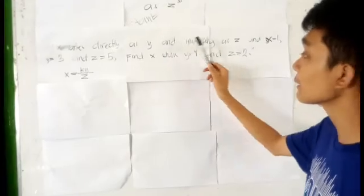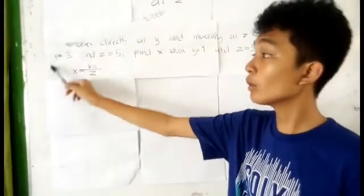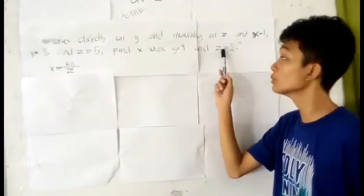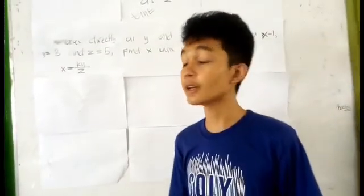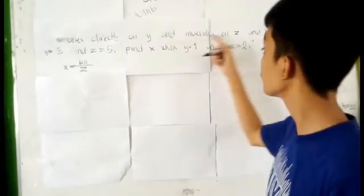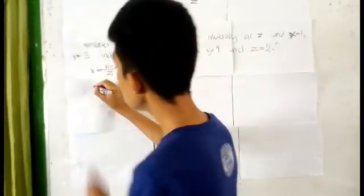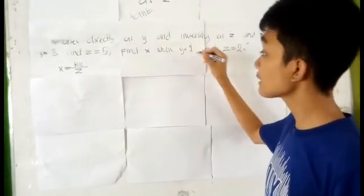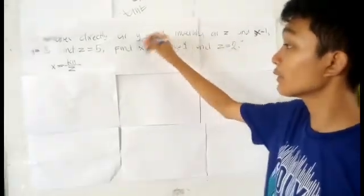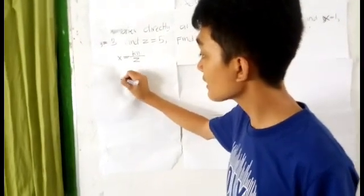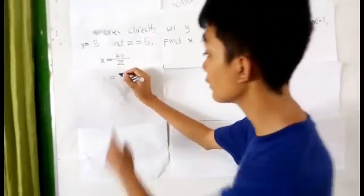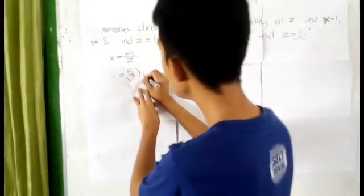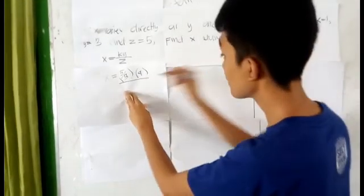So our K equals 5 over 3. Here is another example of combined variation: X varies directly as Y and inversely as Z, where X equals 1, Y equals 3, and Z equals 5. Find X when Y equals 4 and Z equals 2. We have already found the value of K, the constant, which is 5 over 3. So next, we substitute Y equal to 4 and Z equal to 2 to find the value of X. X equals K, which is 5 over 3, multiplied by Y equals 4, over Z equals 2.